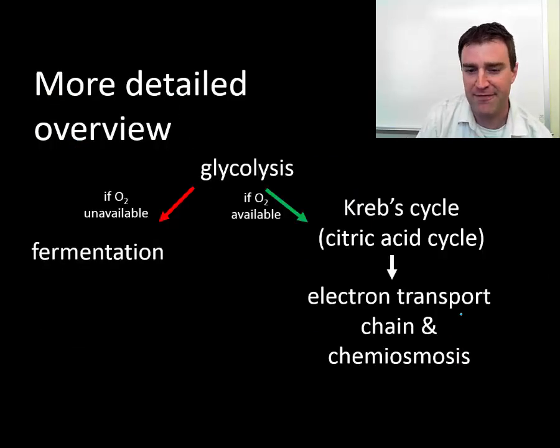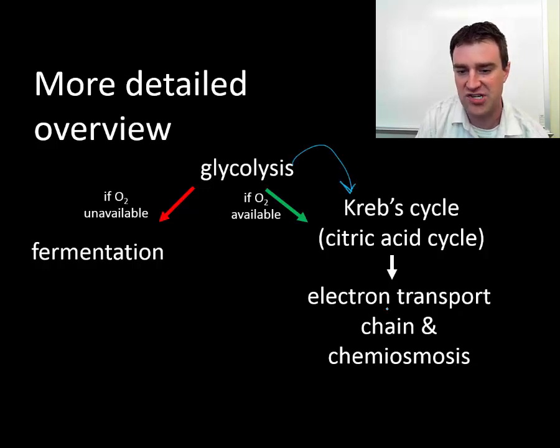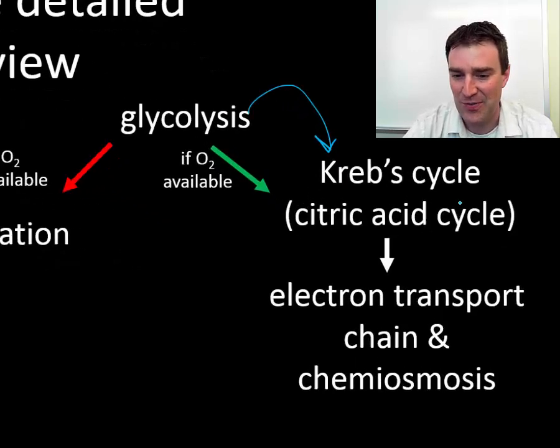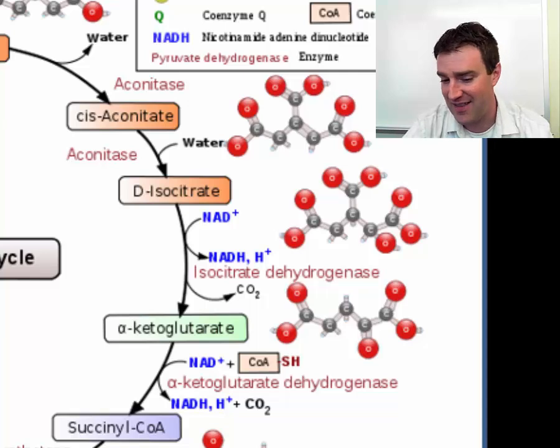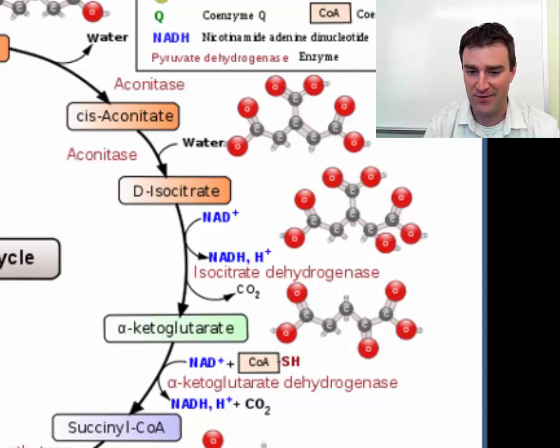So let's continue down the right path first. We'll get to fermentation a little bit later but assuming that we have oxygen available we can continue to finish cutting up the sugar in this next step that's sometimes called the Krebs cycle in textbooks, sometimes called the citric acid cycle. Sorry that we haven't quite decided as a biology group which one to call it.